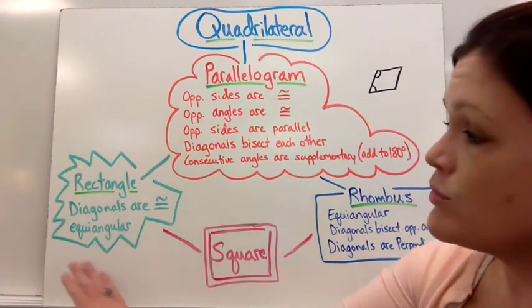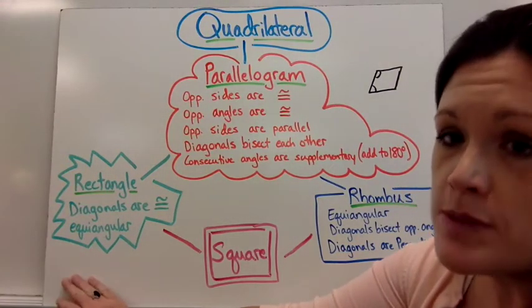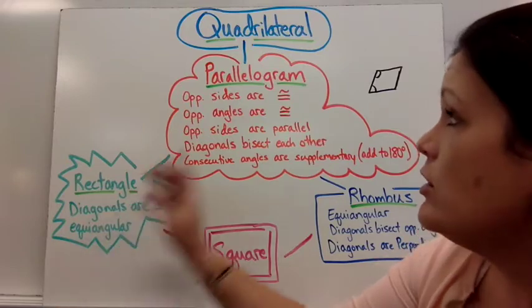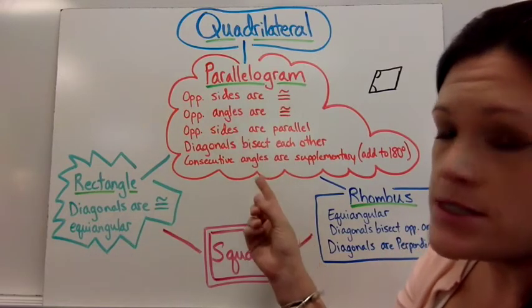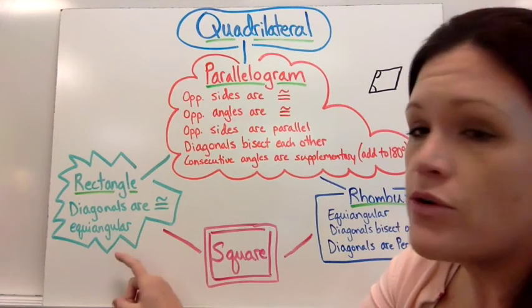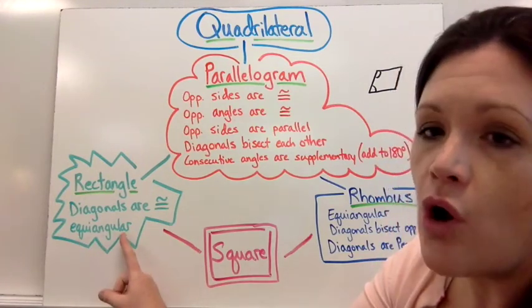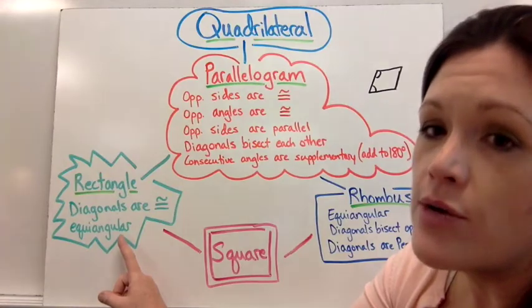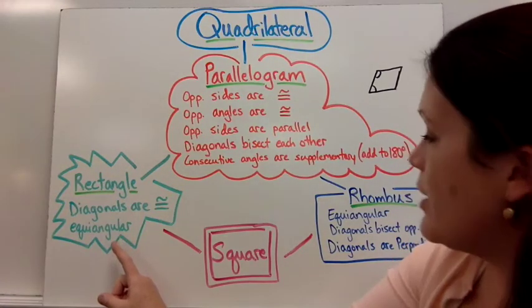But then if they tell you it's a rectangle, that's even more specific. So a rectangle would be all of these characteristics plus the diagonals are congruent. That's the symbol for congruent. And it's equiangular. So all the angles in a rectangle are equal. Hopefully you also know that by now.